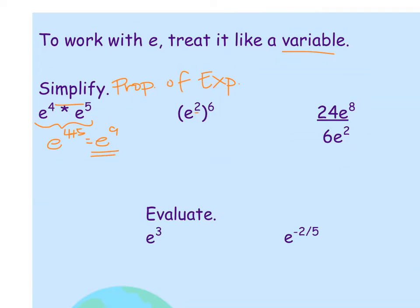If you have an exponent on the inside with e being raised to the outside exponent, we multiply. e to the 2 times 6 would be e to the 12th. That's a 12 right there.